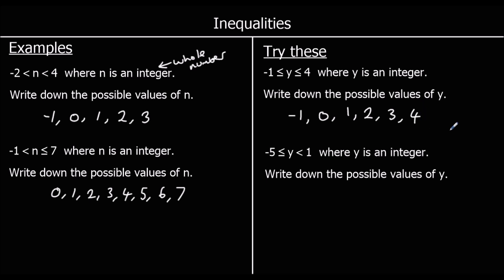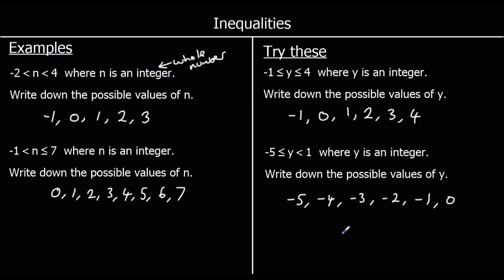And the second one: y is bigger than or equal to minus 5 and less than 1. So in between minus 5 and 1 — it can equal minus 5, it can't equal 1. So we've got minus 5, minus 4, minus 3, minus 2, minus 1, and 0. It can't equal 1, so those are all the options.